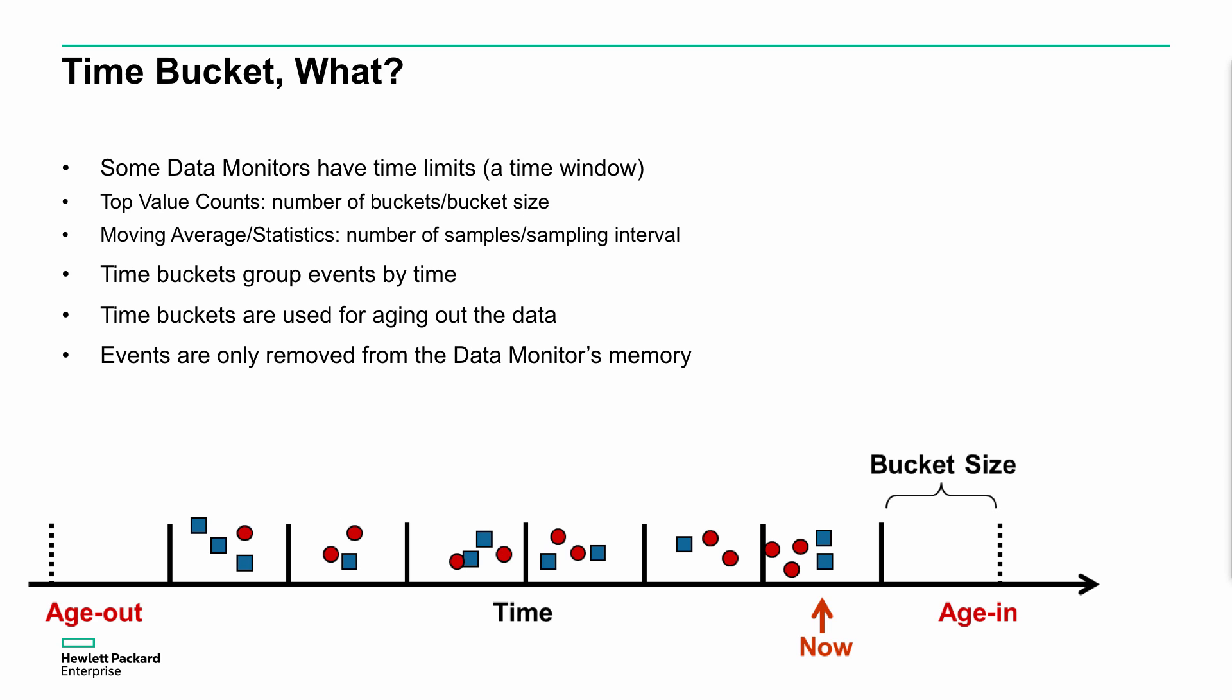They're only removed from the data monitor's memory. Remember, we talked about this as the life cycle, the way that events flow through the system as a whole. Data monitors are one particular element of the process and it flows into those data monitors and then ultimately onto the next stages accordingly. We're not deleting anything. This is just an extra calculation that we're doing. If an event matches a particular filter, it then gets passed to those data monitors to do this additional statistical calculation.